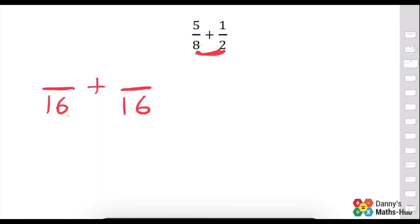So we know our two denominators in our new sum are both going to be 16. What did we have to times the 8 by to get 16? Well, we times it by this 2. So we're also going to times the 5 by it. 5 times 2 is 10.